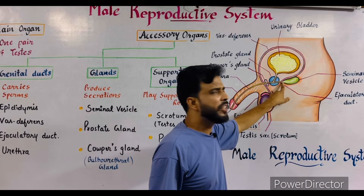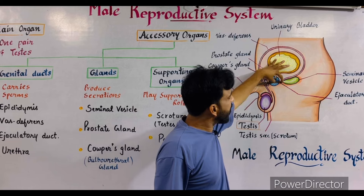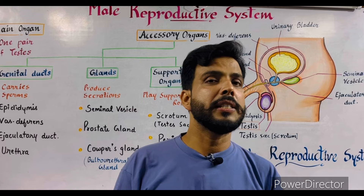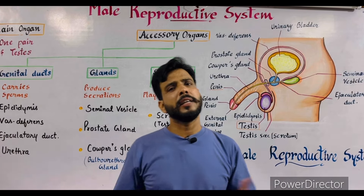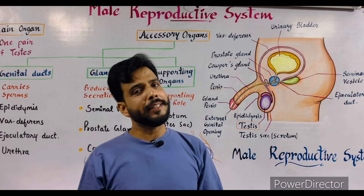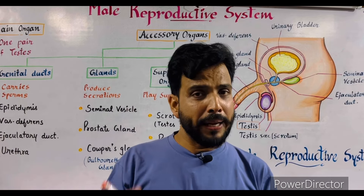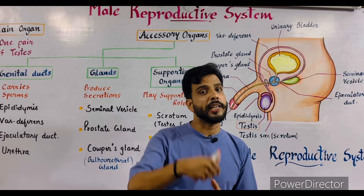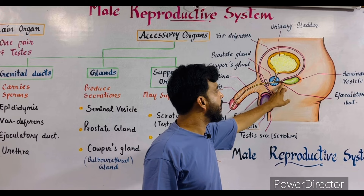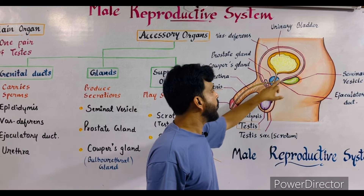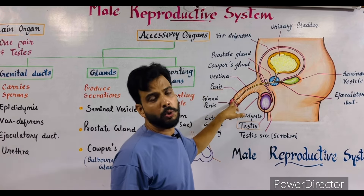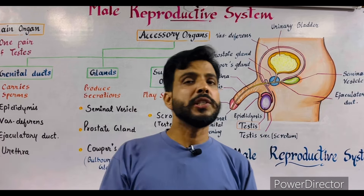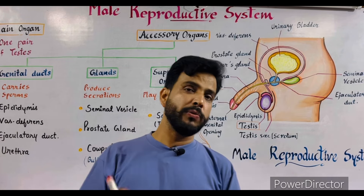After the seminal vesicle, you can see another duct which is about 1 to 1.5 centimeters long — this is known as the ejaculatory duct. During sexual intercourse at the time of climax, the male ejaculates and releases sperm with semen inside the vagina of the female. At that time, the ejaculatory duct pumps the semen into the urethra, which passes through the penis. So the important function of the ejaculatory duct is ejaculation.